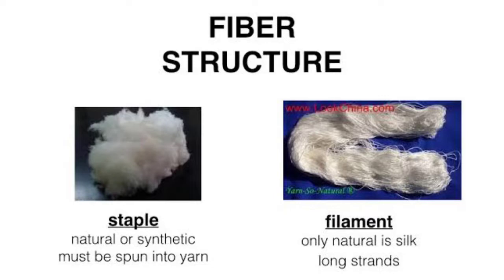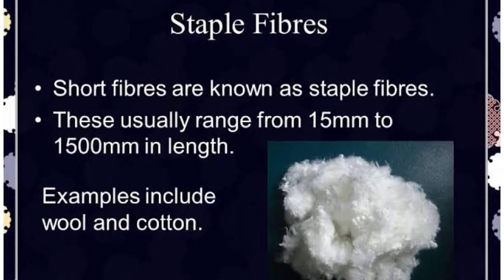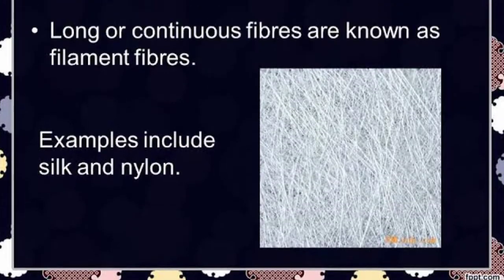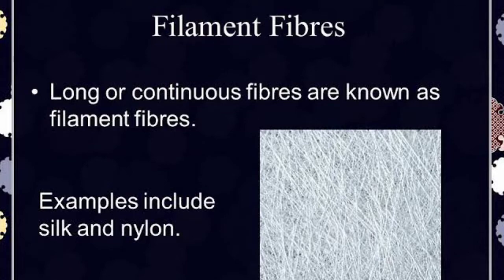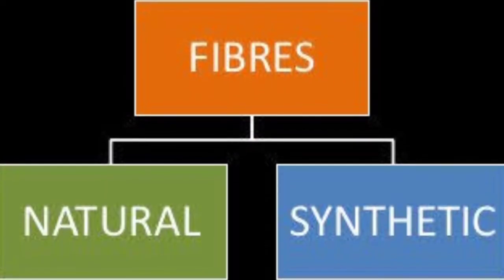Based on their length, fibers can be classified into two types: staple fiber and filament fiber. Fibers which are short in length are called staple fibers — for example, cotton. Fibers which are long in length are called filament fibers. All human-made fibers are filament fibers — for example, nylon.